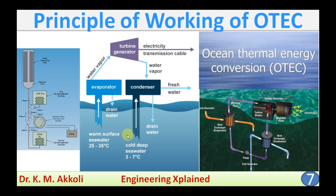This temperature difference of 20 to 25 degrees Celsius is used — the warm surface water is used to produce vapor of some organic fluids. Those vapors can be used to run a turbine and electricity can be generated. That is the principle behind the working of OTEC.